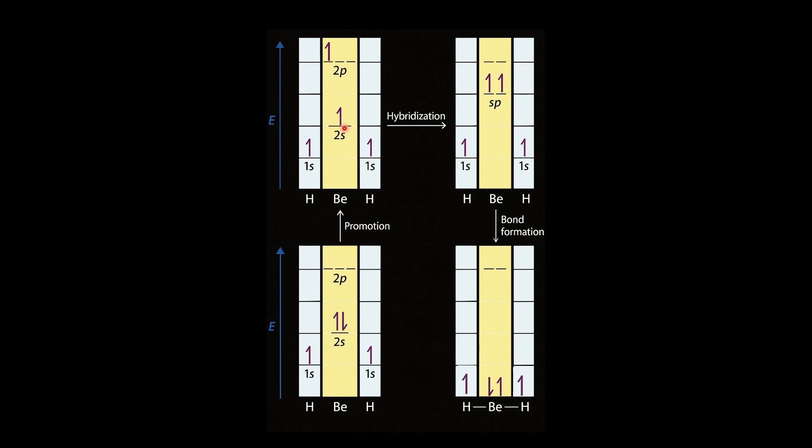Then the next process was hybridization where we got two equivalent sp orbitals. And then the next step, which is a very crucial step, is the bond formation. The whole process of forming BeH2 becomes energetically favorable only if the energy released when the two beryllium hydride bonds form is greater than the energy we have spent in exciting or promoting the electron and the hybridization process. So if that condition is met, the molecule forms and becomes stable. This step of the bond formation is very, very crucial.